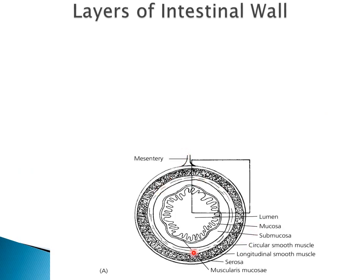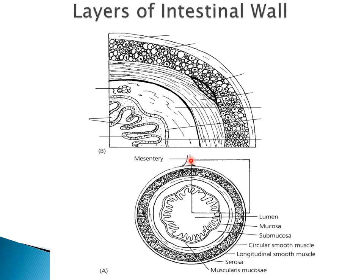This is another cross-sectional view of the intestine. This is the lumen of the intestine, and from the innermost part to the outermost part there are several layers. The innermost layer is called the mucosa, whereas the outermost layer is called the serosa. Between the mucosa and the serosa is the submucosa and the muscular layer. If we magnify this portion, you will see that the mucosa consists of small cells called epithelial cells.